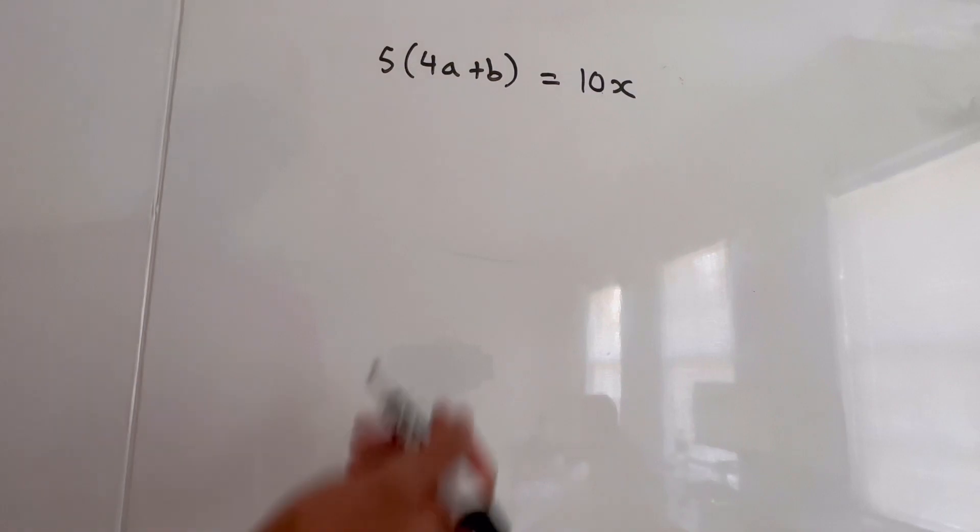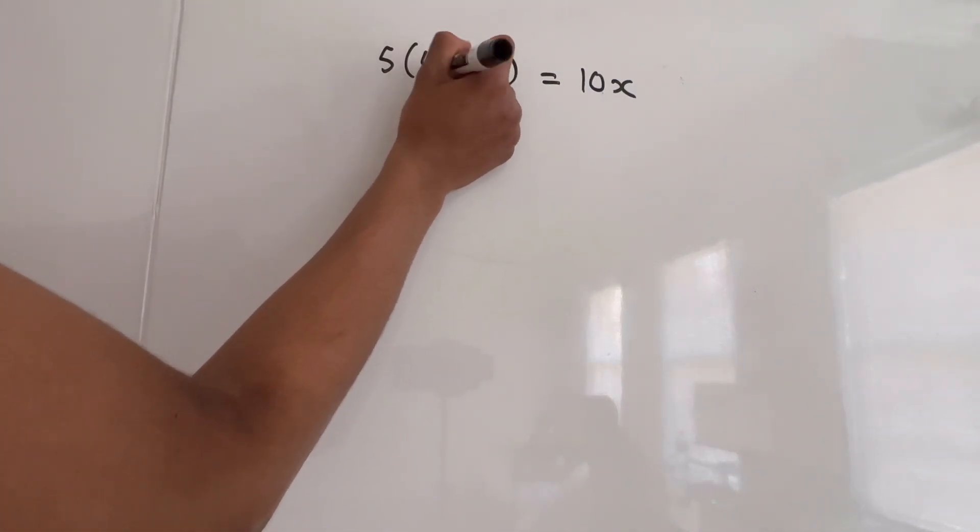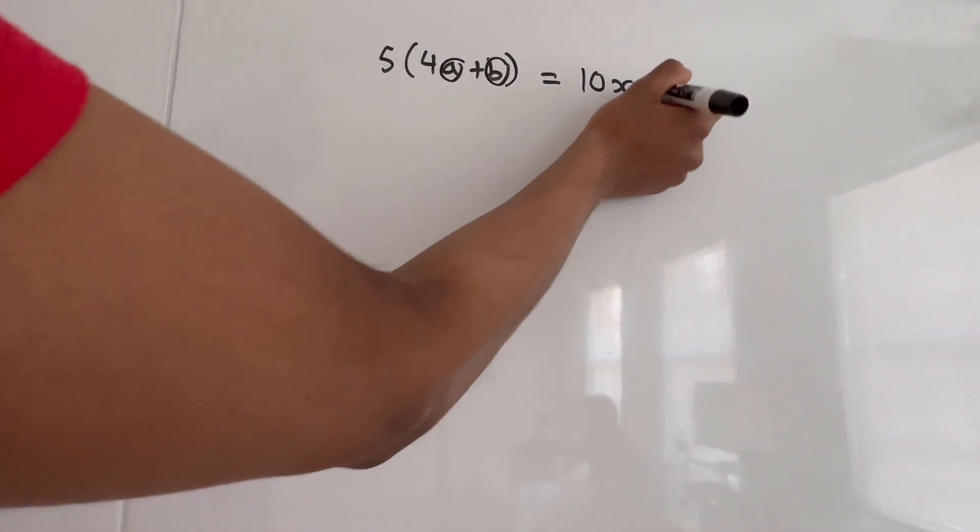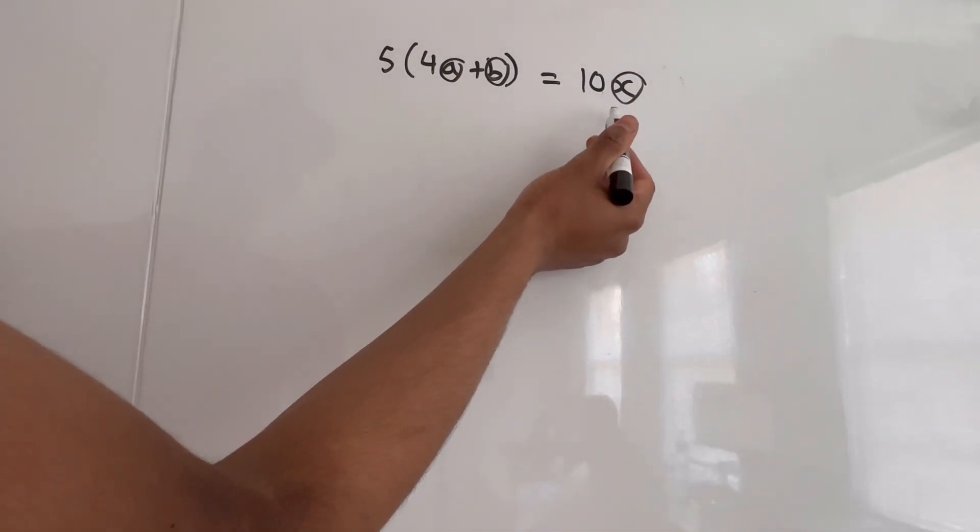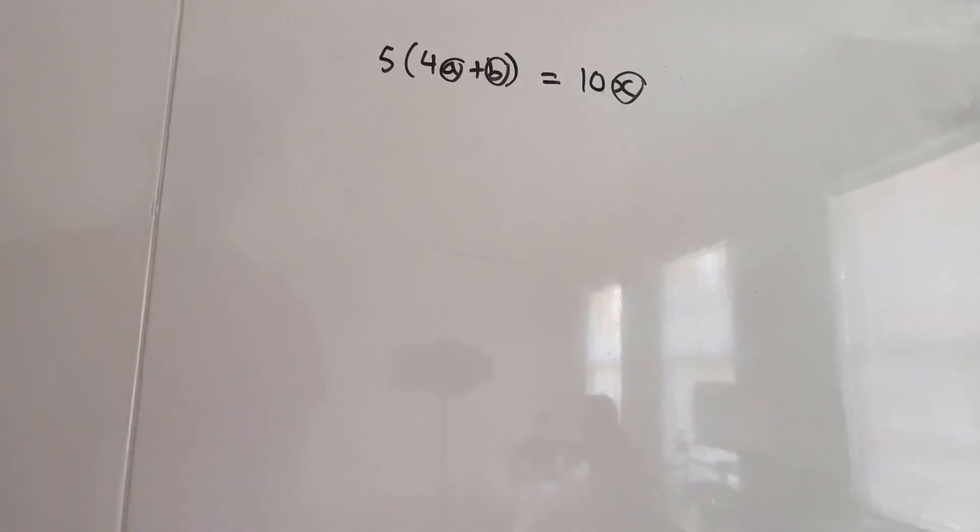So as you can see, in this equation, we have A, B, as well as X. So as usual, we're going to want to isolate X, but we're just going to have to deal with these unknown coefficients.